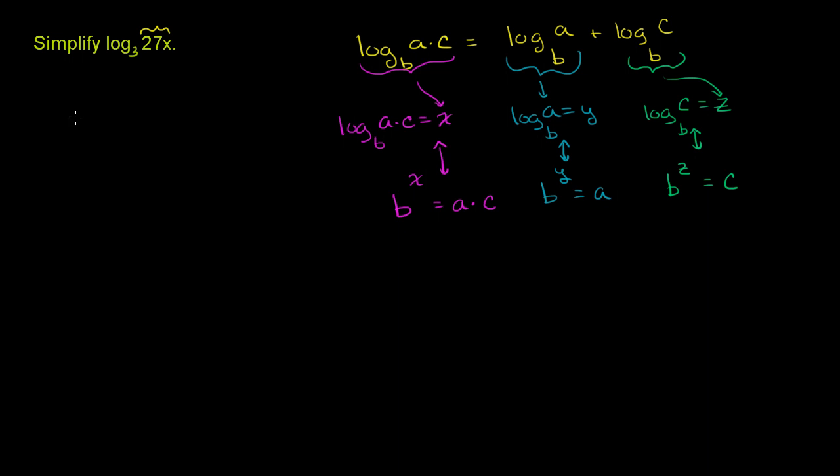Well, if we know that a is equal to b to the y, and c is equal to b to the z, then we can write b to the x power is equal to b to the y power, that's what a is, times b to the z power.